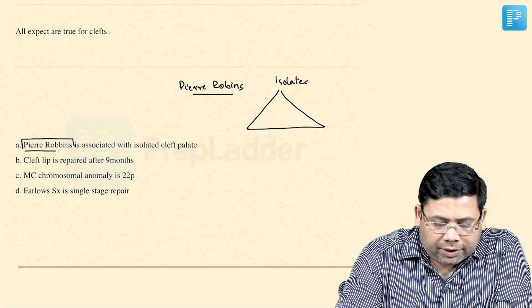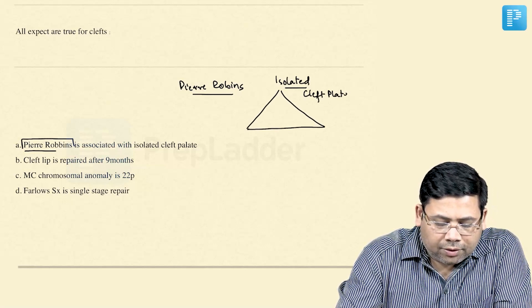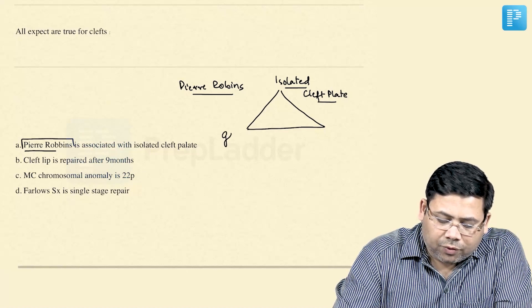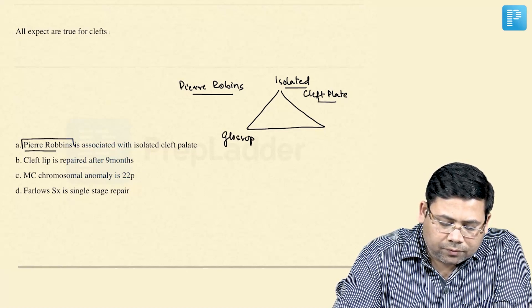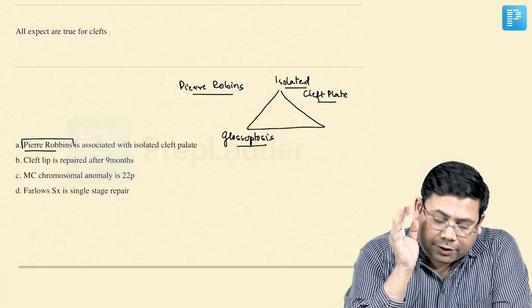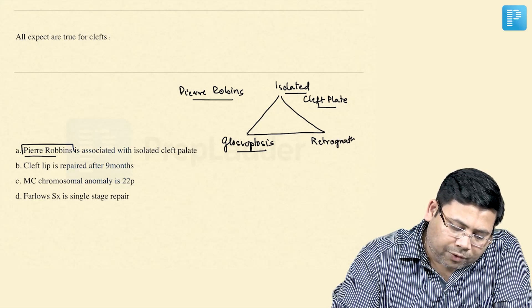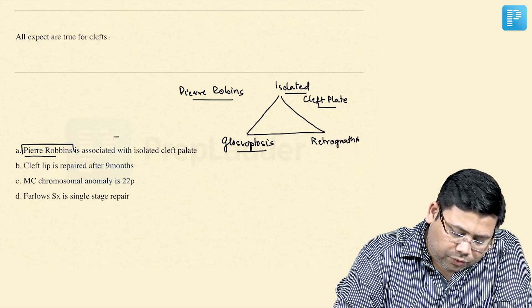Isolated cleft palate, point number one. The second is along with that you get to see Glossoptosis. Glossoptosis, isolated cleft palate and Retrognathia. Yes, point number one is absolutely right. This is true.